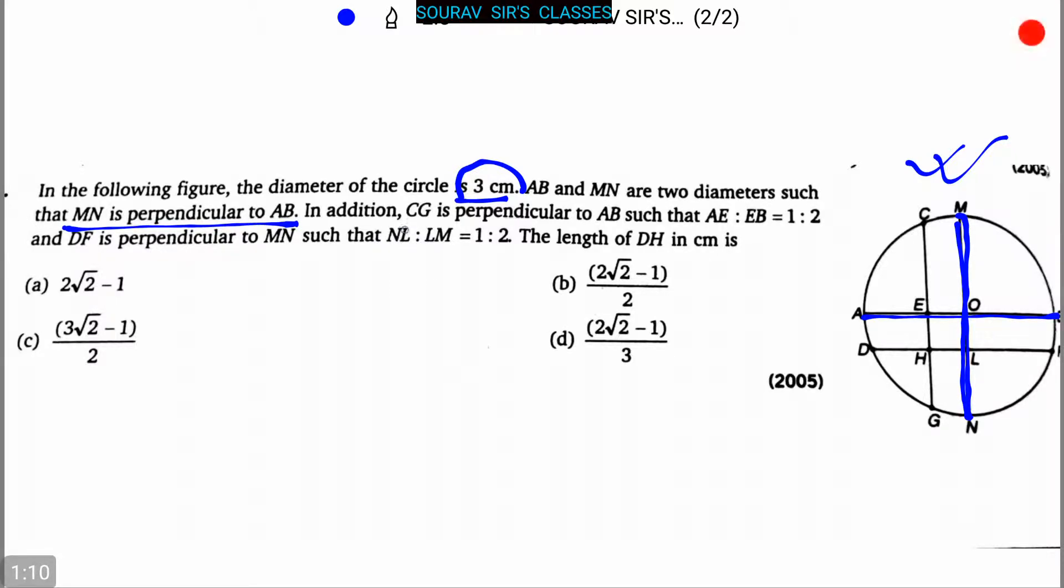Now in addition, CG is perpendicular to AB. CG which is this one, is also perpendicular to this AB such that AE, which is this part, is to this part, is equal to 1 is to 2.